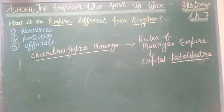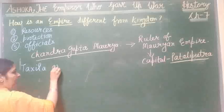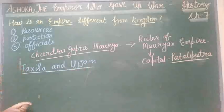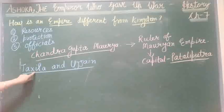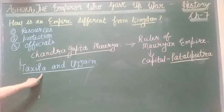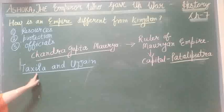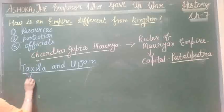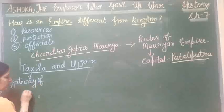The main capital of the Mauryan Empire was Pataliputra, but the provincial capitals were Taxila and Ujjain. If the ruler wanted to control Taxila, he annexed the territories of the gateway of the northwest.